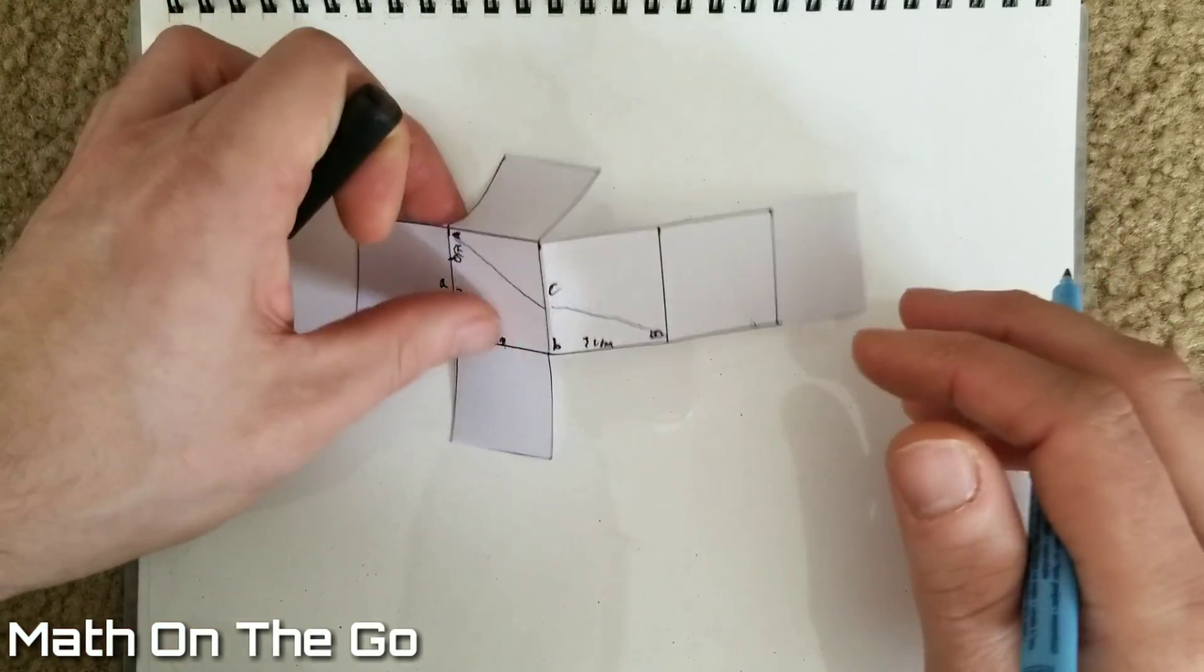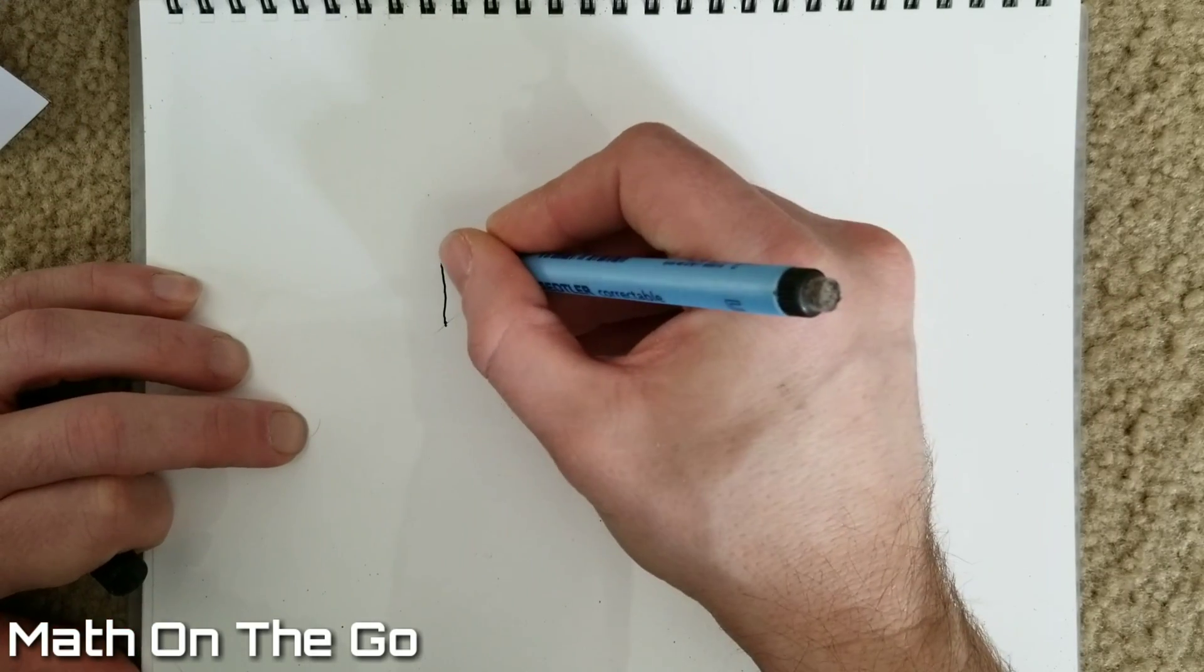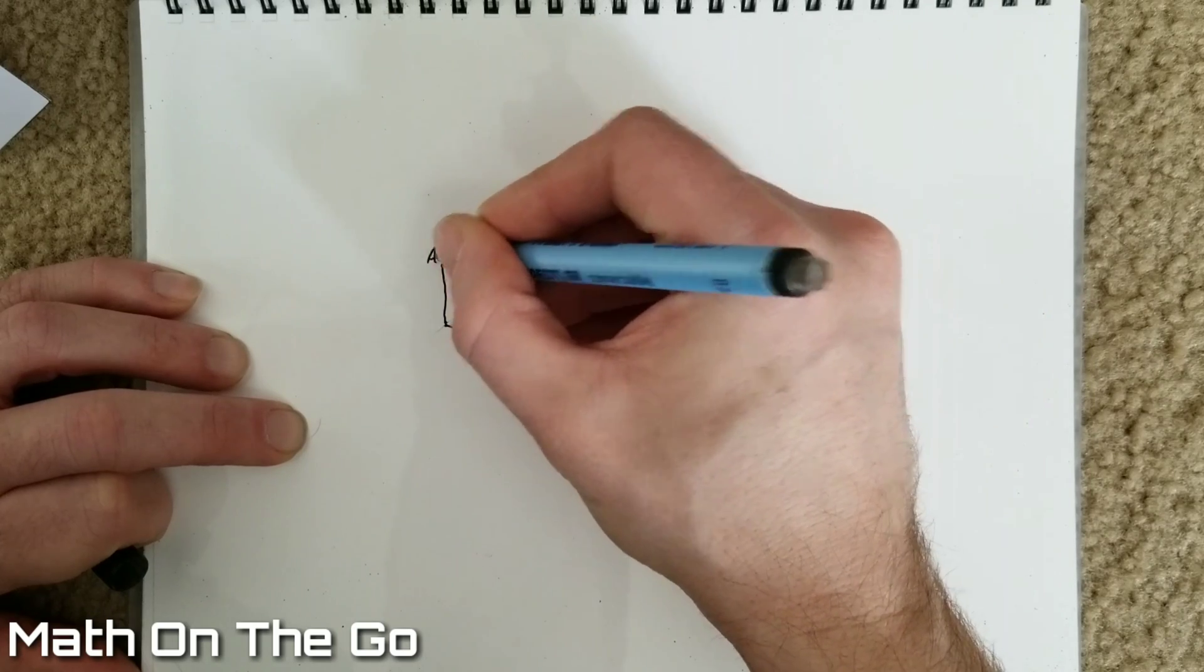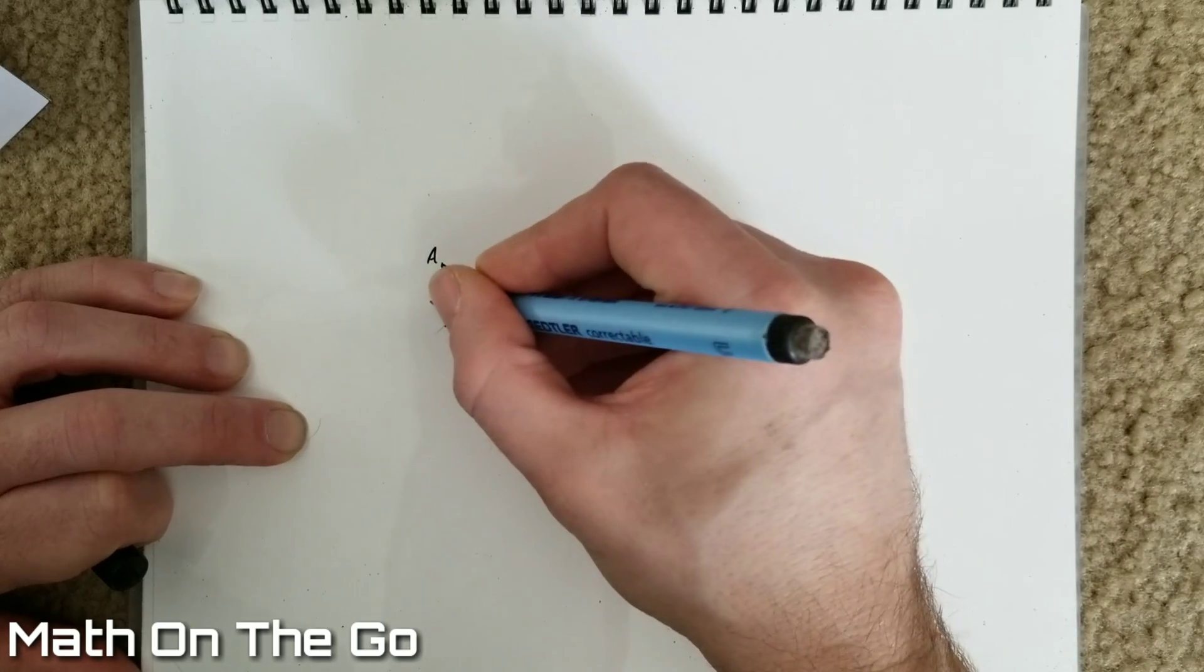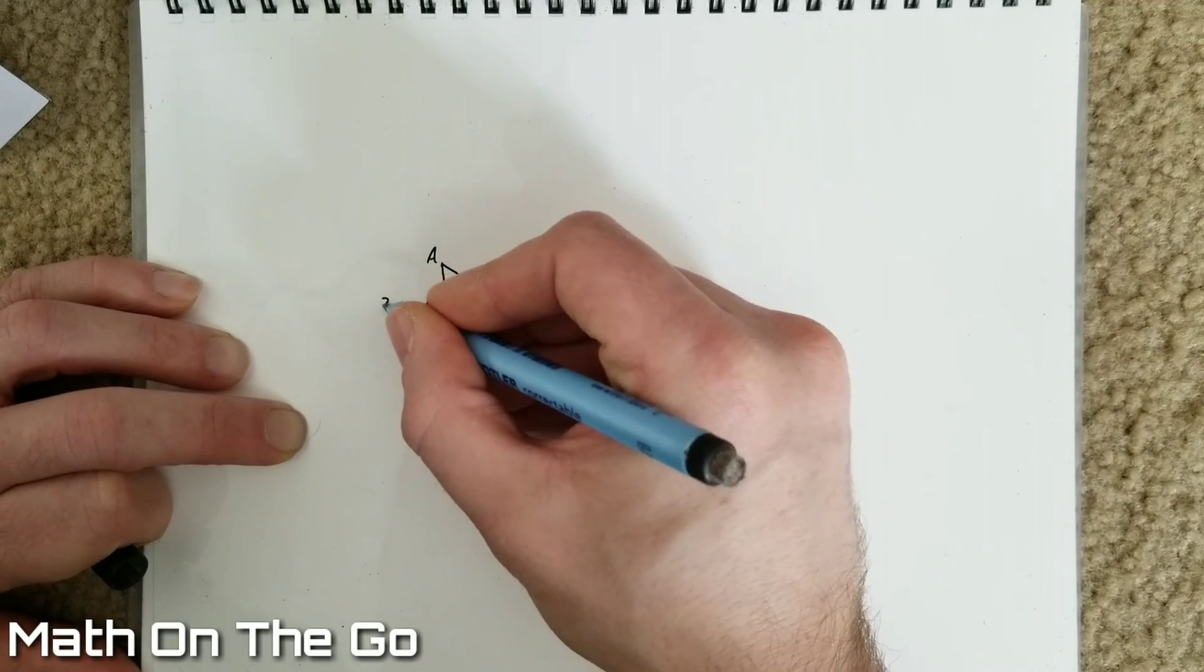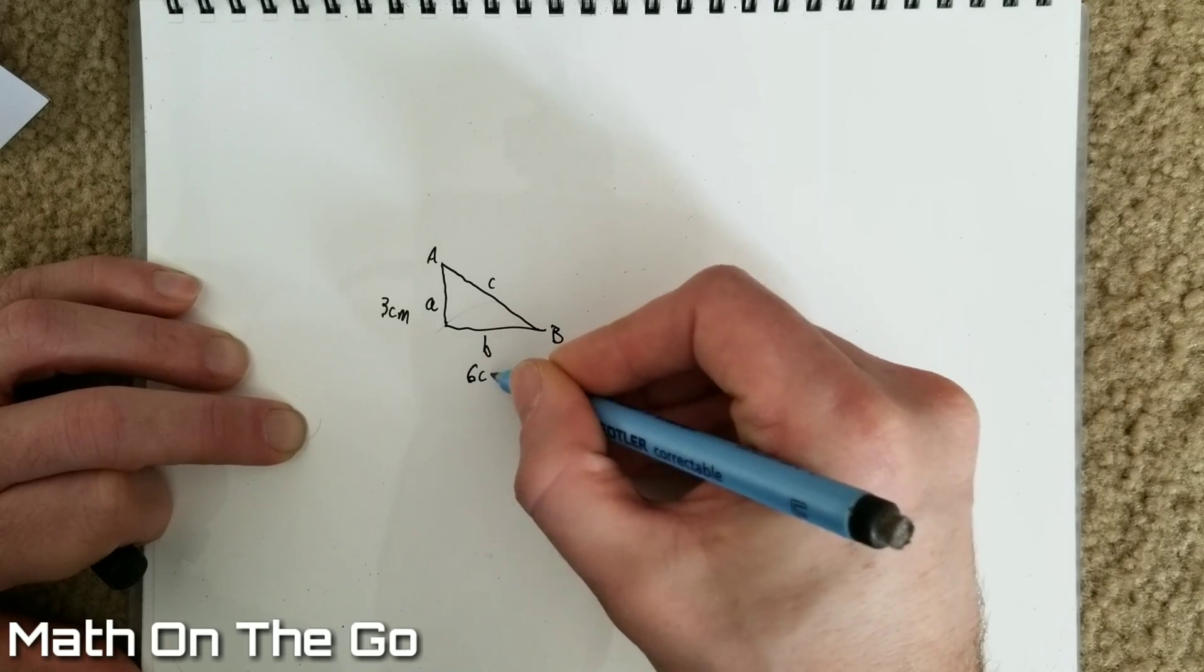So, what we have is a triangle. This is our A, this is our B, this is side A, this is side B, and this is side C. This side is three centimeters, this was two three centimeters, so that's six centimeters.